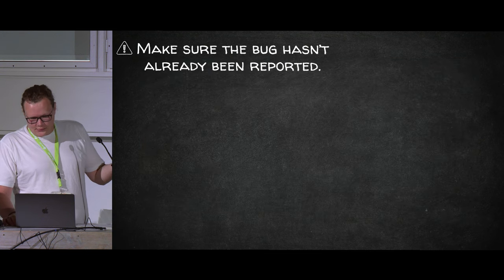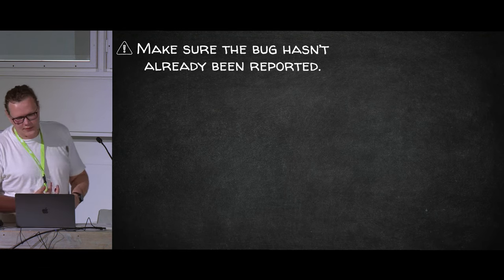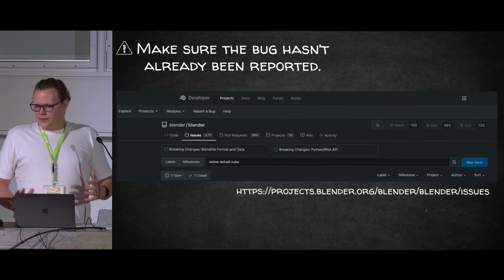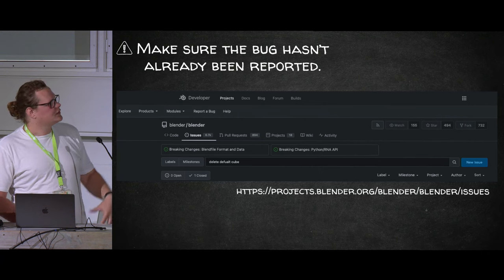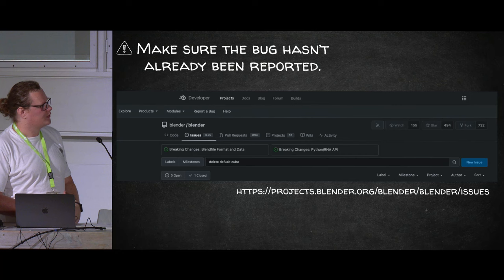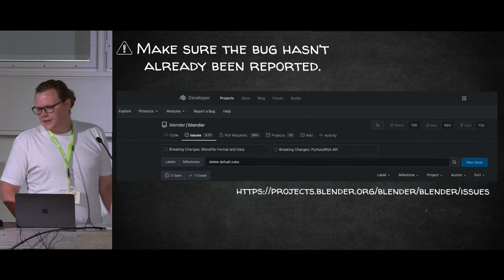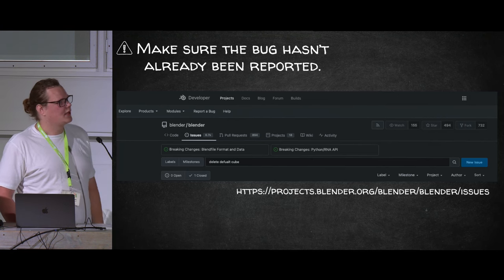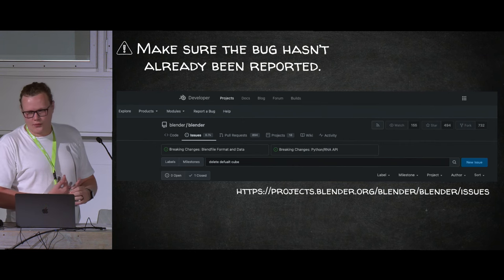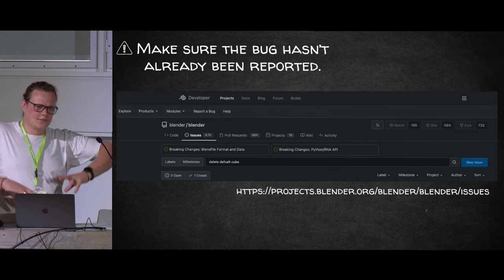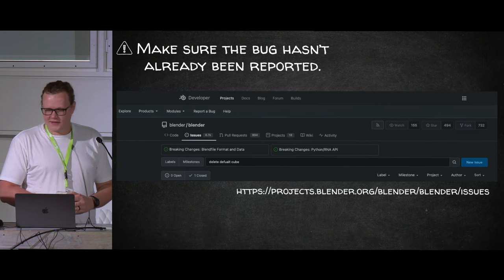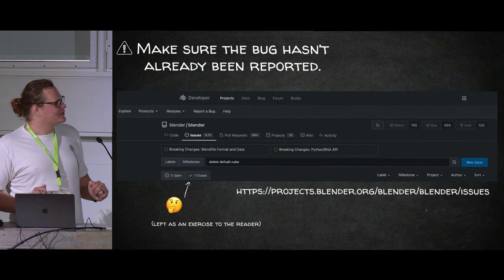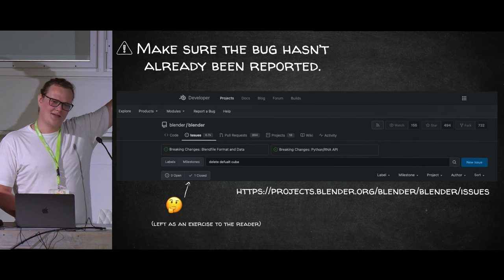If the bug is still there, make sure it hasn't already been reported. The community is pretty good at finding and reporting critical bugs. If it's not been reported, that's your job. Go to projects.blender.org — this is the actual Blender project with all the source code. There's an Issues tab where you submit bug reports. There's a list from most to least recent, and a search feature where you can put in a query for your problem. Interestingly, there's even a closed issue for deleting the default cube.